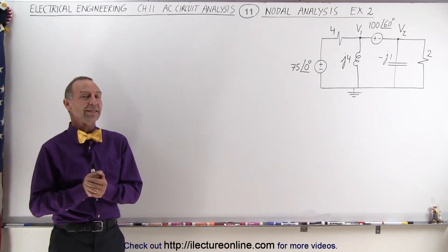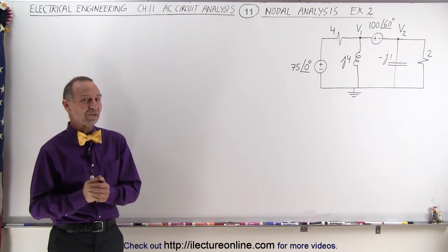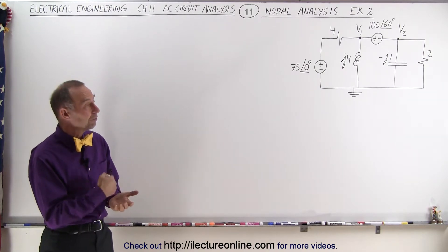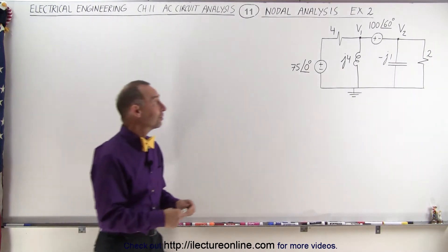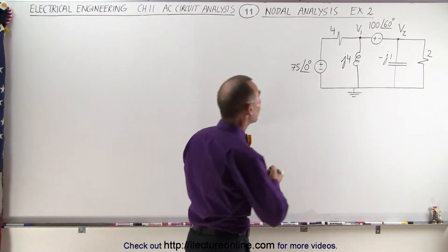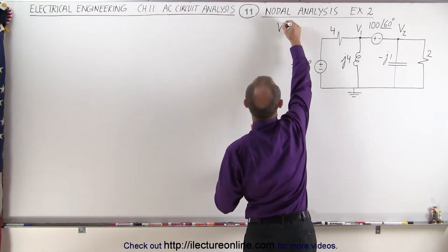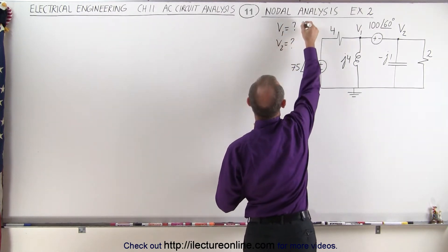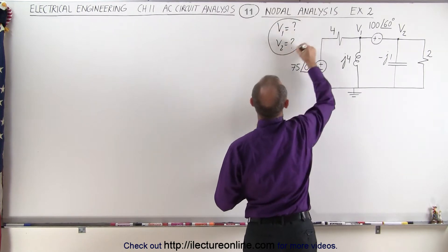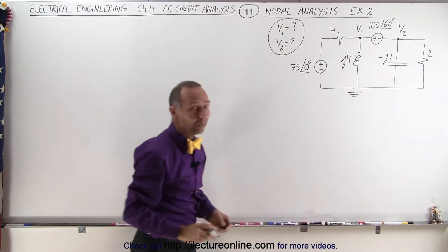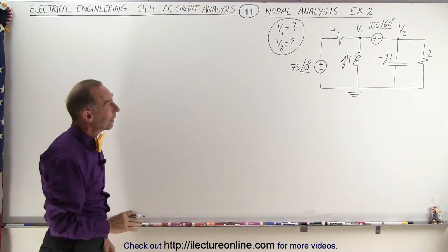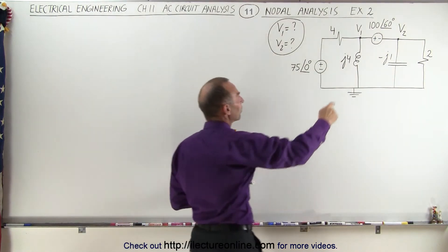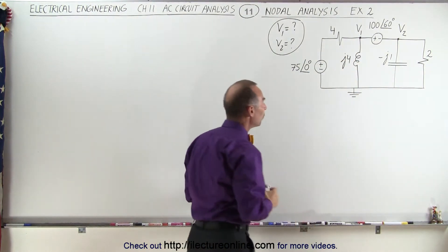Welcome to Electron Line. Now we're ready for something a little bit more difficult. We have two nodes, V1 and V2, and the objective is to find what the voltage is at V1 and the voltage at V2. So we need to find the voltage at both of those nodes. Again, we're going to use nodal analysis, and we're going to start with the node here where we try to calculate V1.